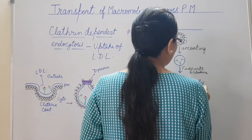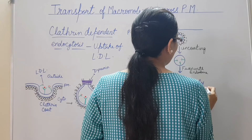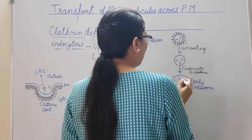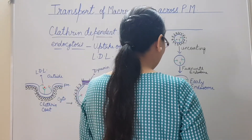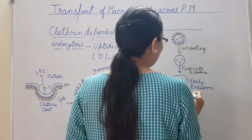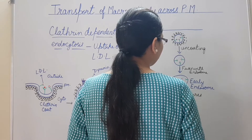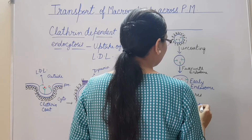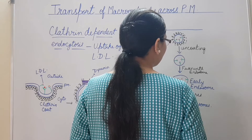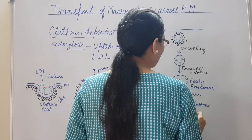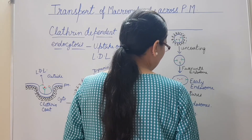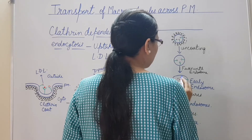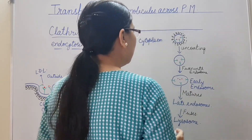This uncoated vesicle fuses with the endosome, known as early endosome. Here the pH is low, and this low pH causes the release of LDL from its receptor. The early endosome then matures into a late endosome, which fuses with the lysosome. The lysosome contains hydrolyzing enzymes and this LDL is then hydrolyzed.